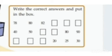This is your homework: write the correct answers in the boxes. The first number is 78, the next given number is 80, then 82 — what should the next numbers be? Find out and complete the sequence.